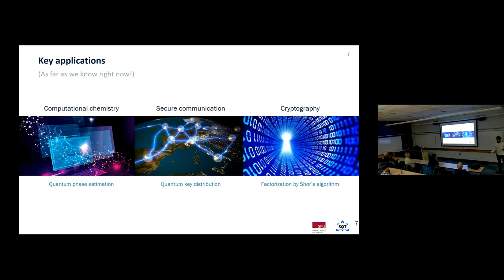Very broadly, what kinds of things are in that space of algorithms? One that's very exciting is computational chemistry. Chemistry is fundamentally the study of quantum systems, and as those systems get larger — larger molecules or materials — it gets harder to simulate them exactly on a classical computer. Problems where you have many correlated electrons become very difficult. There are molecules whose reactions and energy levels we don't understand precisely, but a quantum computer allows you to simulate those systems using the same kind of complexity as the problem you're solving. One technique developed for this is called quantum phase estimation.